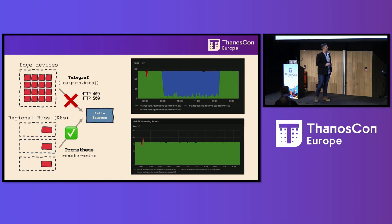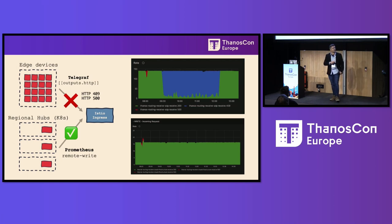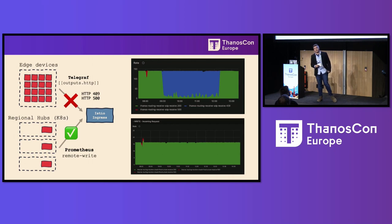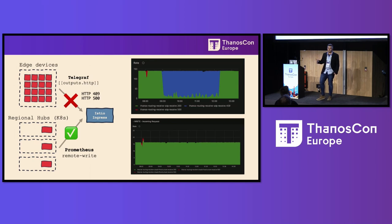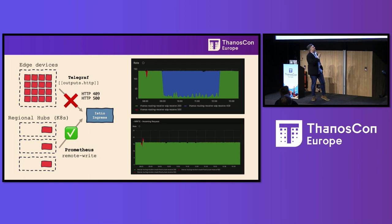It turned out the Telegraf components had the problem. Prometheus remote write was going fine, but Telegraf — those pipelines, all those tenants — had issues. All this blue is actually 409 errors, with just a tiny amount of 500s at the top. The red on the left is the initial monster query that killed the receives for everyone. There was some outage getting 500s, and then an hour later the Telegraf components started to have issues.